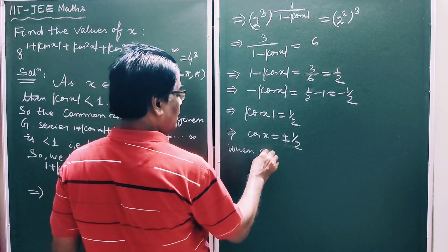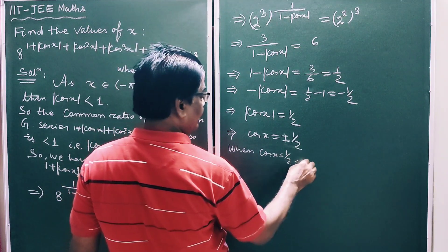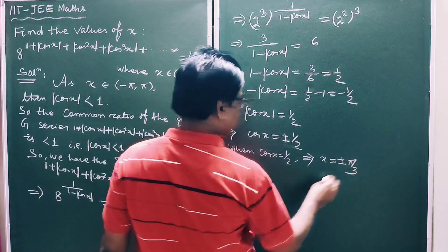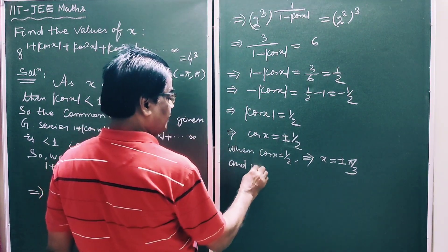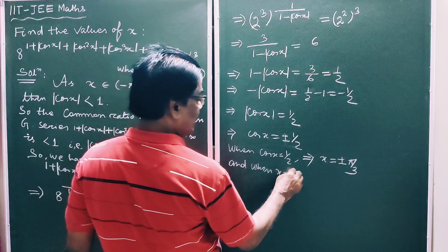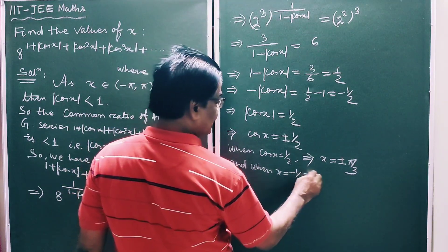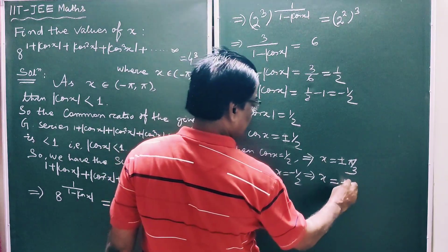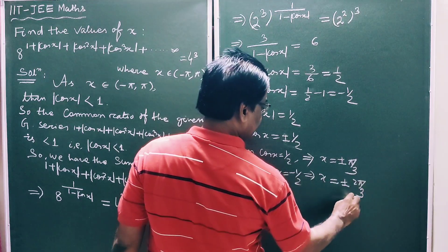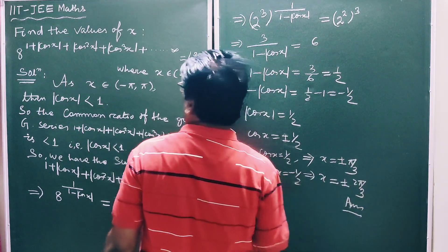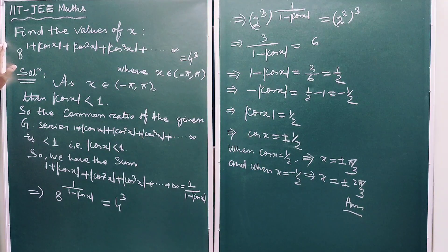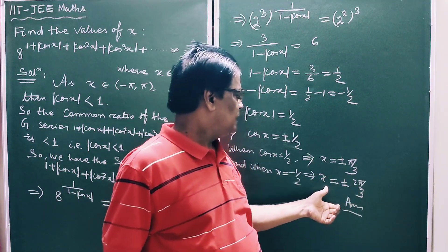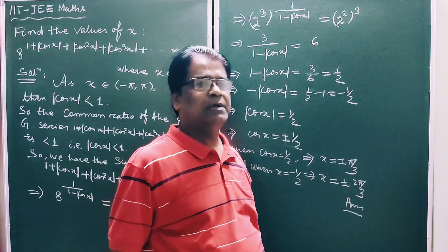This implies cos x is equal to plus or minus 1 by 2. When cos x equals 1/2, then x equals plus or minus pi by 3. When cos x equals minus 1/2, then x equals plus or minus 2 pi by 3. So the solution is x equals plus or minus pi by 3 and x equals plus or minus 2 pi by 3.